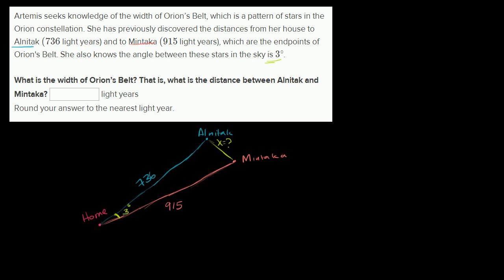Let's just apply it. The law of cosines tells us that x squared is going to be equal to the sum of the squares of the other two sides. It's going to be equal to 736 squared plus 915 squared minus 2 times 736 times 915 times the cosine of 3 degrees. Once again, we're trying to find the length of the side opposite the 3 degrees. We know the other two sides.